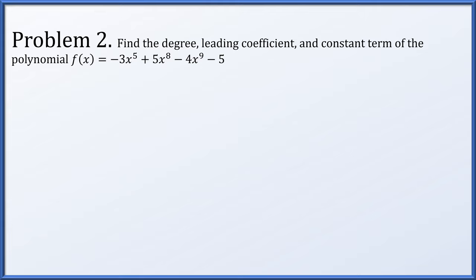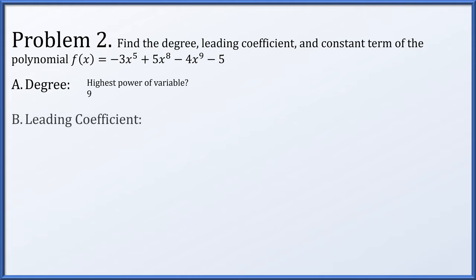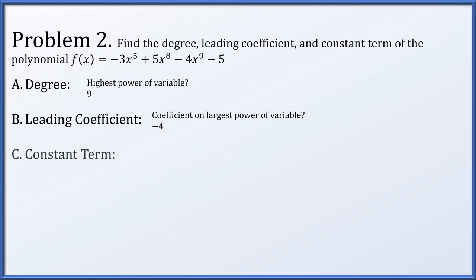For problem two, find the degree, leading coefficient, and constant term of the polynomial f(x) = negative 3x to the fifth plus 5x to the eighth minus 4x to the ninth minus 5. The degree is the largest power of the variable, and we see x to the ninth, so it is of degree 9. The leading coefficient is negative 4. The constant term — the term without a variable — is negative 5.